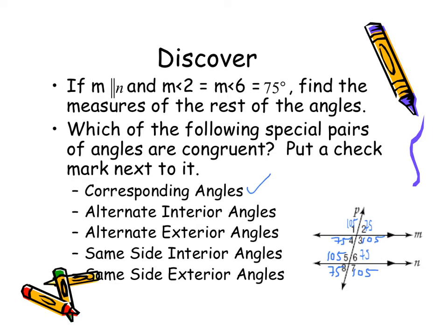How about our alternate interior angles? That would be like 4 and 6 — 75 and 75 — and 5 and 3 — 105 and 105 — congruent once again. Alternate exterior: 1 and 7, same thing. These are congruent.